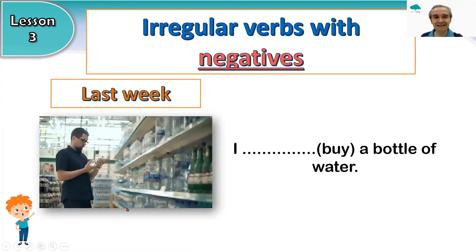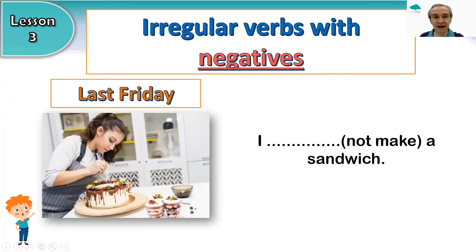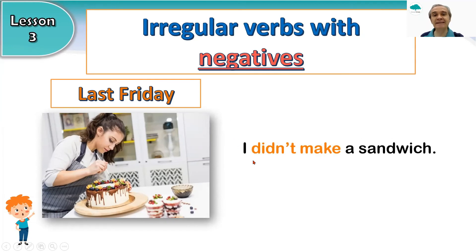Last week — let's look at the picture. What is it? And the verb: buy a bottle of water. So last week, the past tense for buy is 'bought' — I bought a bottle of water last Friday. Now, is this a sandwich? No. So last Friday, I didn't make a sandwich.